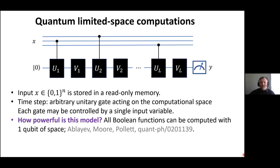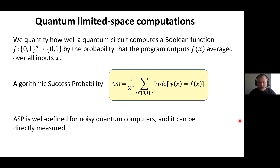For the theory section, to quickly review the computational model: we allow inputs to serve as controls to the unitaries, which are applied to the computational bit and can be arbitrary, even uncontrolled. It is known that all Boolean functions can be computed with a single bit of space. Because we want to compare noisy near-term quantum computers to classical computers, we define the notion of algorithmic success probability, which is a popular measure for the success of implementing quantum algorithms on quantum hardware. Basically, it asks: what is the average probability of computing the function correctly, assuming a random uniform distribution over inputs?